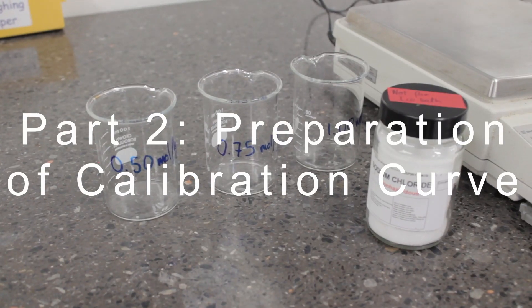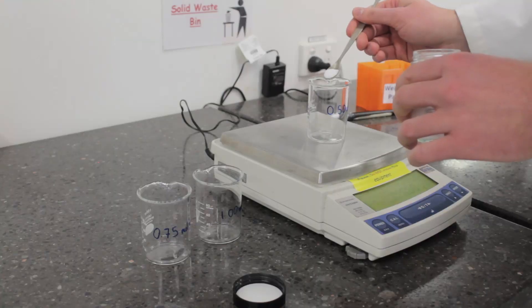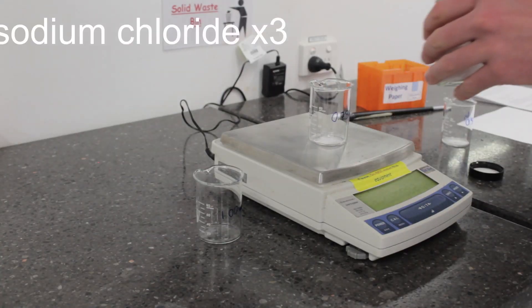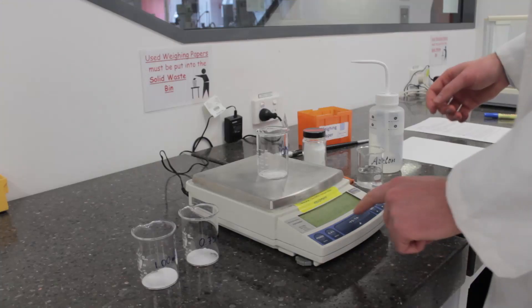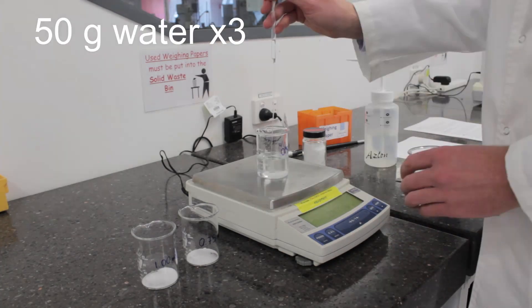Now let's construct our calibration curve. Using the masses you calculated in the pre-lab, weigh out the three masses of sodium chloride, tare, and add 50 grams of water to each.